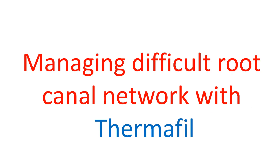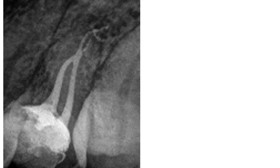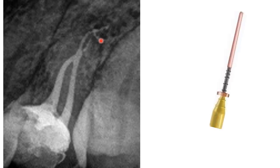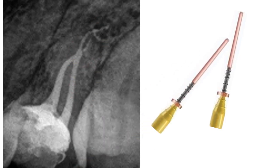Thermafil can be used for managing difficult root canals. For example, in a very difficult and rare case with two canals merging into one and then dividing to two, it is very difficult to obturate this root canal system with any other technique. We use the first Thermafil with soft gutta-percha to obturate one region, and then use another to obturate the other canal.